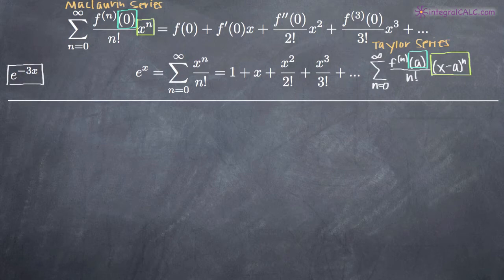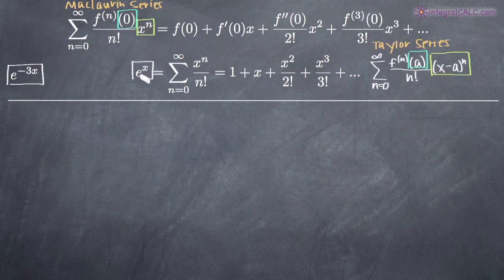Well there are three famous Maclaurin series formulas that describe specific series. One is e to the x, one is cosine of x and the other is sine of x. In this case, we're going to be dealing with the specific Maclaurin series formula for the function e to the x because our problem is e to the negative 3x.